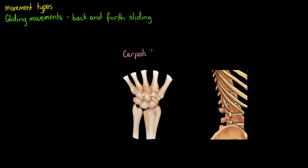The carpals, tarsals, and also the articular processes between our vertebrae — the articular processes being the bony extensions that interact with vertebrae above and below themselves. If we move our hands side to side, these bones are going to be sliding across each other's articular surfaces, and we call this gliding. So they slide back and forth or side to side, and that's a gliding movement.